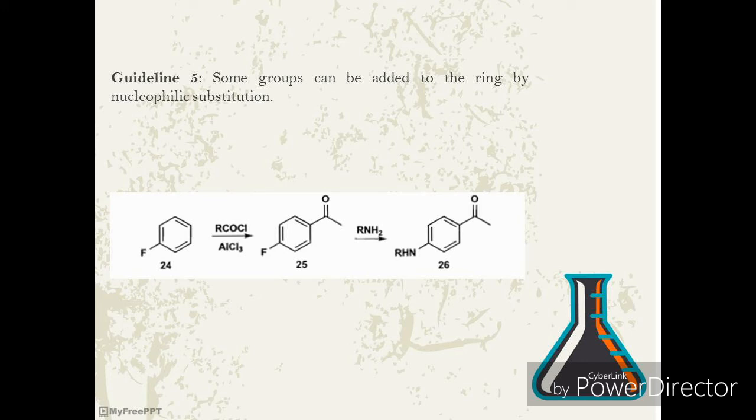Guideline 5: some groups can be added to the ring by nucleophilic substitution. This is mechanistically more difficult than electrophilic substitution and requires an electron-withdrawing activating group such as nitro or carbonyl, ortho or para to a normal leaving group such as a halide. Fortunately, nitration or Friedel-Crafts acylation of halo compounds puts the activating group in the right position for nucleophilic substitution.